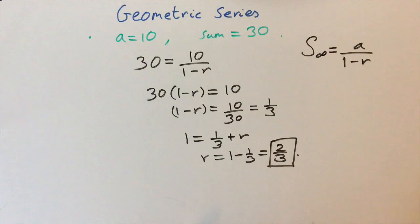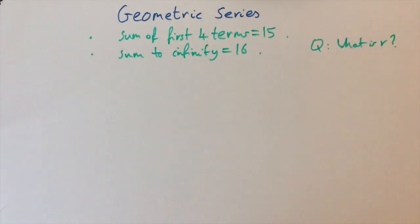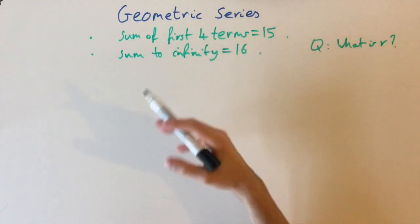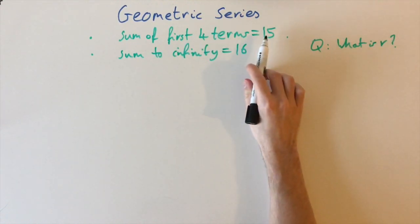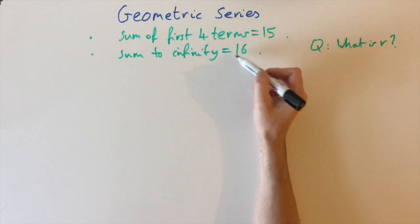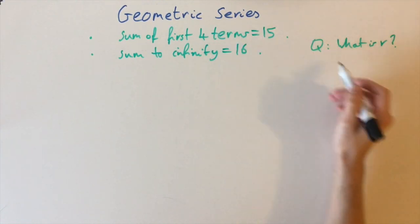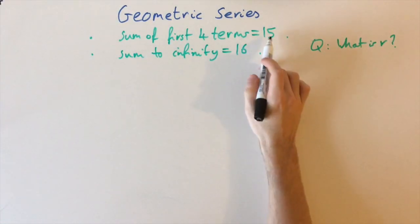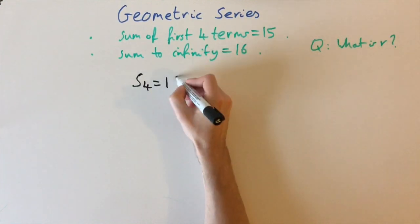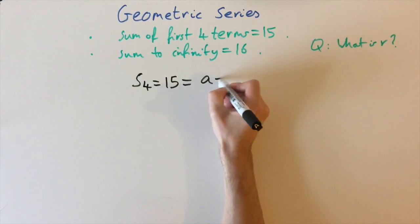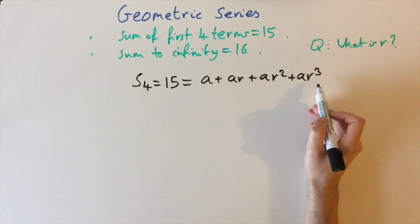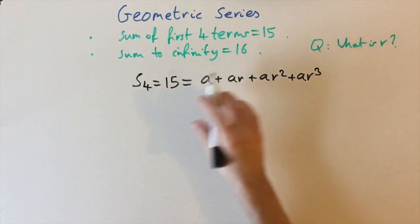Now for a harder final problem. We're told the sum of the first four terms of some geometric sequence is 15, and the sum of all terms to infinity is 16. We need to find the possible values of the common ratio r. Let's write S4 for the sum of the first four terms, which equals 15. The general form is a + ar + ar² + ar³, which are the first four terms.